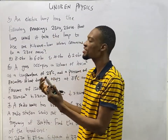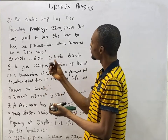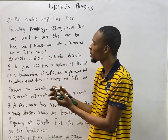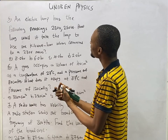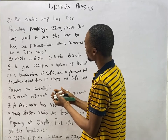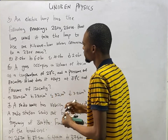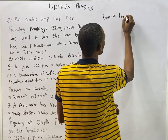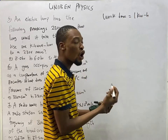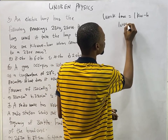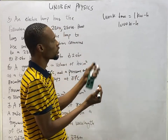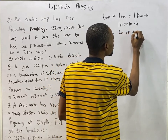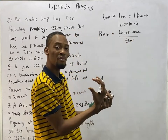Question 5: An electric lamp is rated 230 volts and 250 watts. How long will it take the lamp to use 1 kilowatt-hour when connected to 230 volts? The work done is 1 kilowatt-hour, which equals 1000 watt-hours. Recall that power equals work done over time.